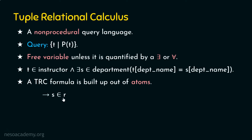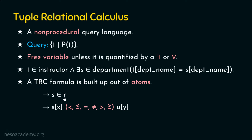A tuple relational calculus formula is built out of atoms. When we say s belongs to R, R is the relation and s is a tuple variable — so atoms like 's belongs to R' combine to form a formula. We also have atoms of the form s[x] θ u[y], where x is an attribute on which tuple variable s is defined and y is an attribute on which tuple variable u is defined. A relation R is comprised of attributes (columns) and tuples (rows).